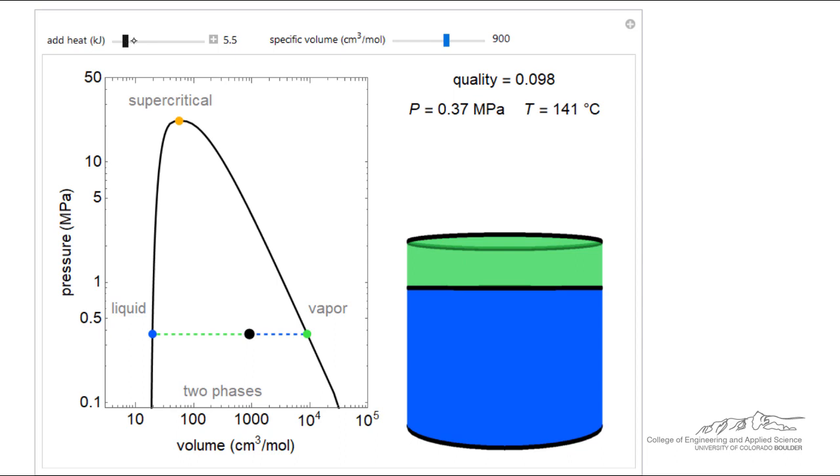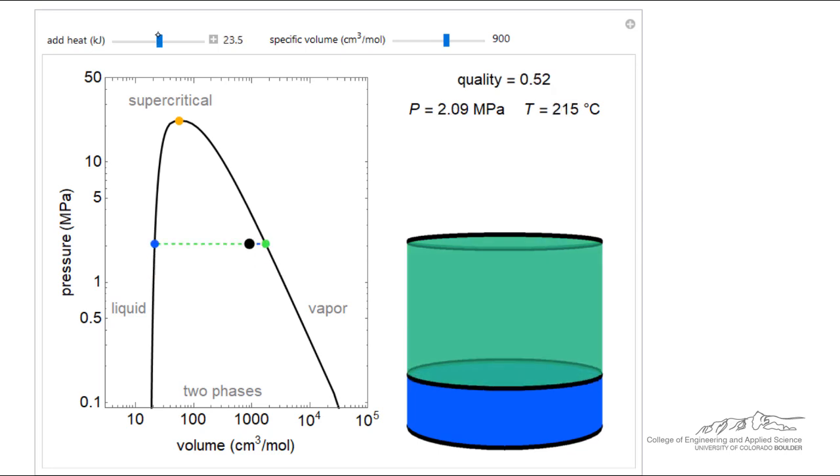So as I add heat, of course the temperature increases, and the pressure increases significantly, and you notice we have more volume, more of the green representing volume on the right side, and so the amount of liquid is decreasing, the amount of vapor is increasing, overall we're at constant volume, and as we keep adding heat, we're going to get to the point where we have almost no liquid, and then eventually get above the saturated line. Now we have all vapor.